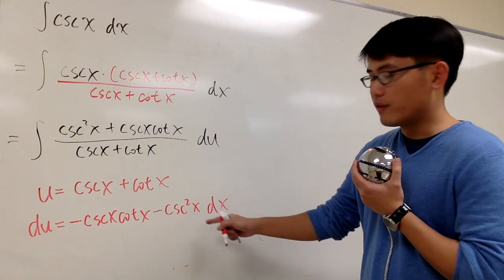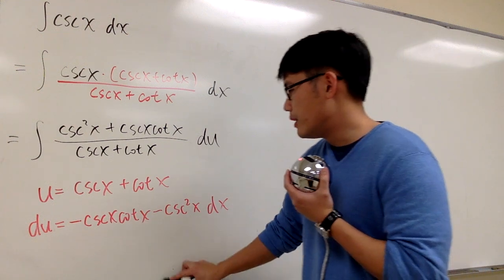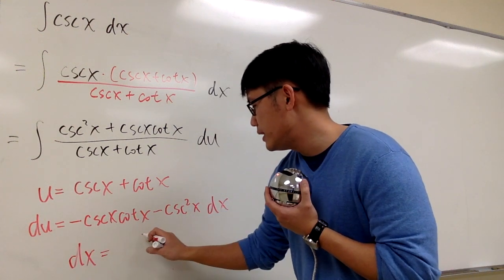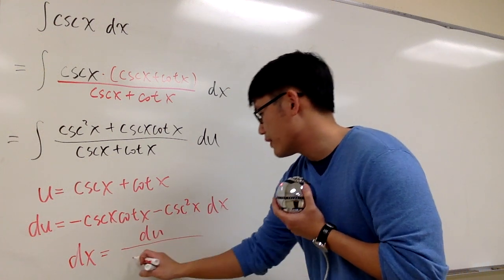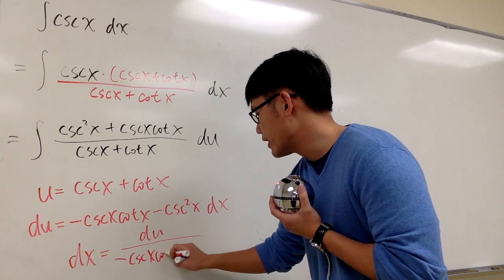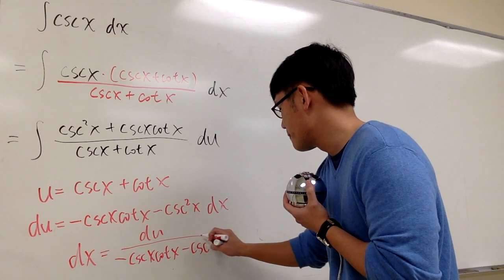And then we can, of course, divide both sides by this entire thing to solve for dx, and I will do that for you guys. So, I'll just say dx equals to du over this entire thing. So, we have negative cosecant x cotangent x minus cosecant squared x.